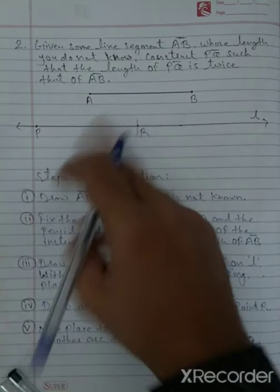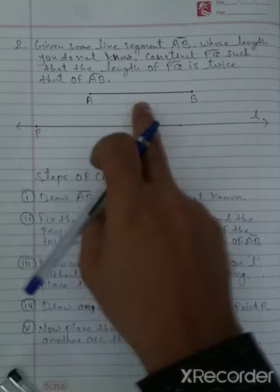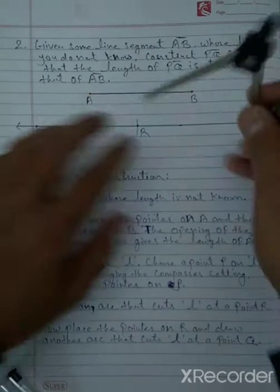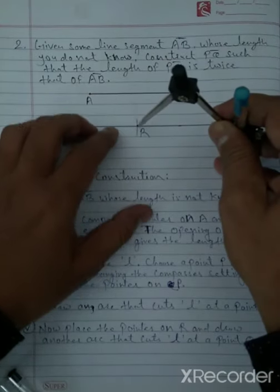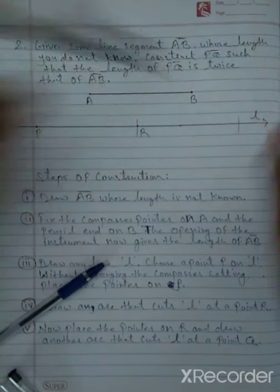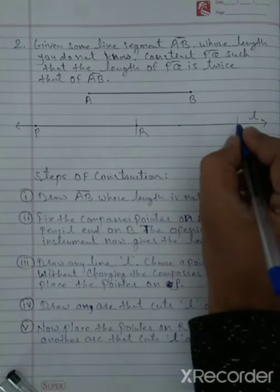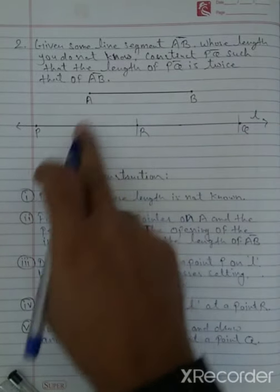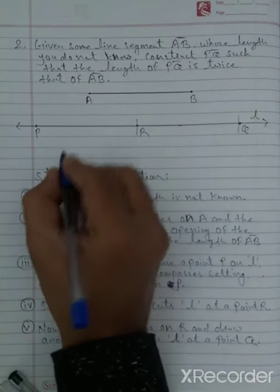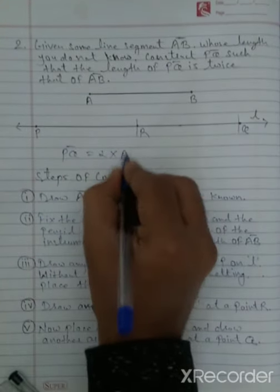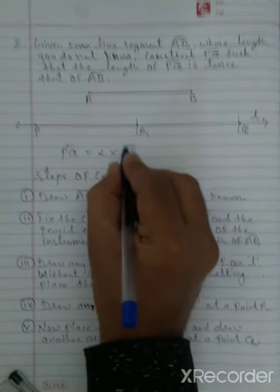Now we have to make PQ twice the length. Without changing the compass setting, we put the pointer on R and cut another arc on line l. We name this point Q. Now you can see this is the first copy and this is the second copy, so line segment PQ is twice the length of line segment AB.